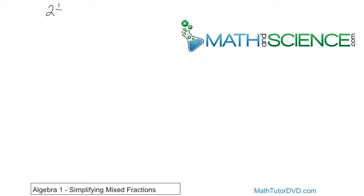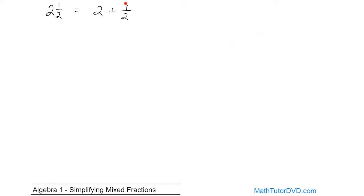The fraction two and one-half — what does that really mean? It means you have two whole candy bars plus one-half of a candy bar. So you see how you have this fractional part added to a whole number. That's basically what a mixed number really is: you have a whole part and a fractional part.